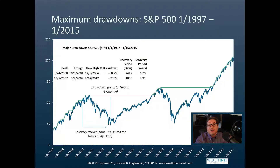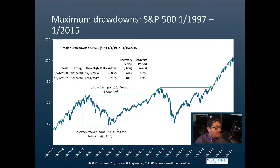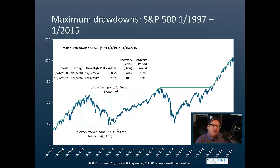This chart shows what a maximum drawdown is. This is the S&P 500 going back from 1997 through 2015. You have these big peak-to-trough falls — that's what a drawdown is: from that peak down to the lowest point, what is that peak-to-trough percentage change? In 2000 we saw a huge drop, and in 2007–2009 we saw another huge drop. The recovery period is how long it takes to get back to even — it could be 6.7 years or 4.95 years. The longer the drawdown, the harder it is.